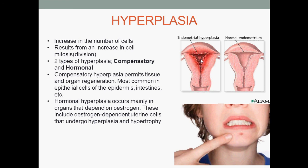Next, hyperplasia. Hyperplasia is an increase in the number of cells, resulting from an increase in cellular mitosis or cell division. There are two types: compensatory hyperplasia and hormonal hyperplasia. Compensatory hyperplasia permits tissue and organ regeneration and is most common in the epithelial cells of the epidermis and intestines, usually in response to injury or damage. Hormonal hyperplasia occurs mainly in organs that depend on estrogen, such as estrogen-dependent uterine cells that undergo hyperplasia and hypertrophy.